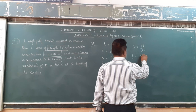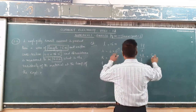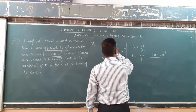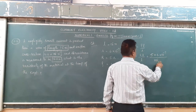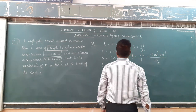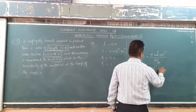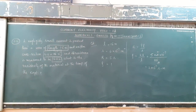So rho = R × A / L. The value of R is 5, area is 6 × 10⁻⁷, and length is 15. Simplifying: 5 × 6 × 10⁻⁷ / 15 = 2 × 10⁻⁷ ohm·meter. Such an easy question. This is based on the relation between resistance and resistivity.